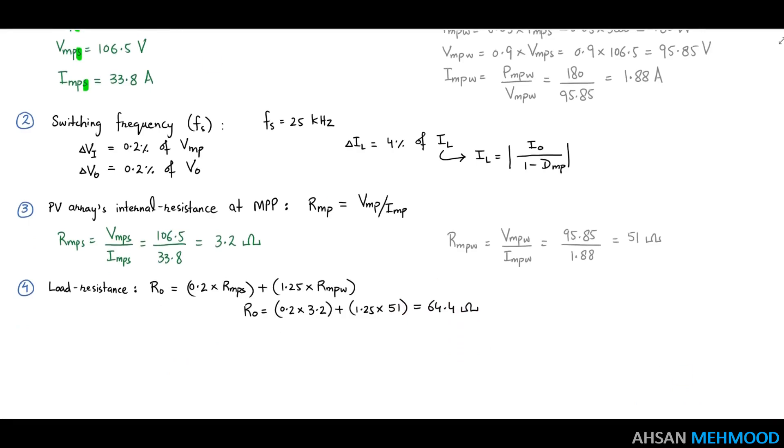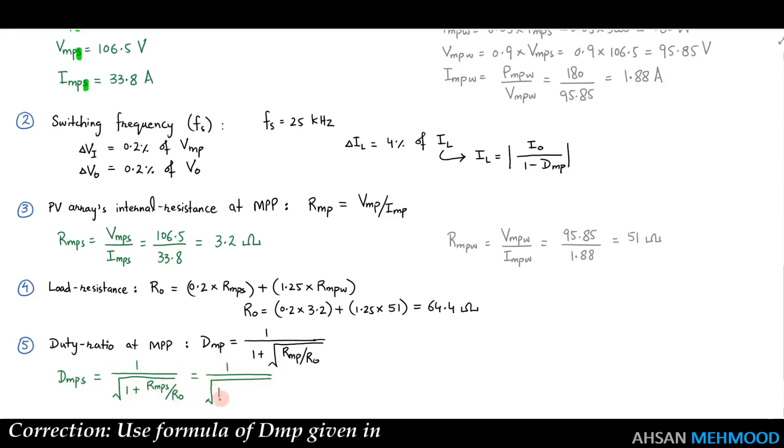The value of the duty ratio at MPP presented by DMP and given by 1 divided by sum of 1 and square root of RMP by R node is calculated in the fifth step. This number is also determined for both standard and worst-case scenarios. DMPS equals 0.8177 and DMPw equals 0.5291.